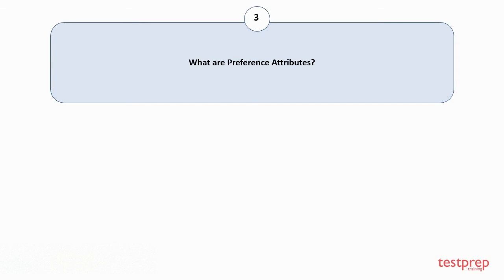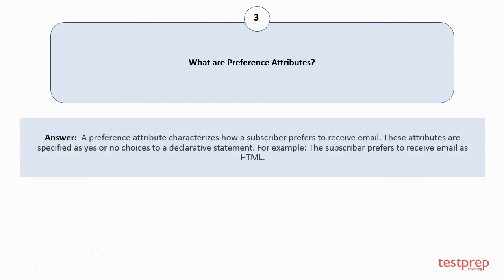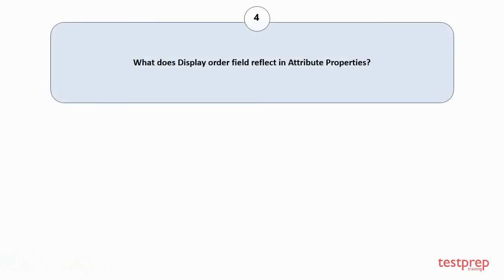Question number three: What are preference attributes? A preference attribute characterizes how a subscriber prefers to receive email. These attributes are specified as yes or no choices to a declarative statement. For example, the subscriber prefers to receive email as HTML.